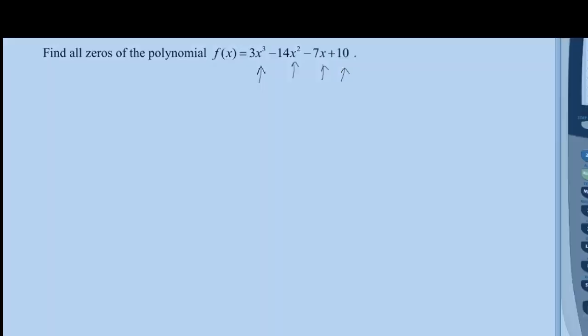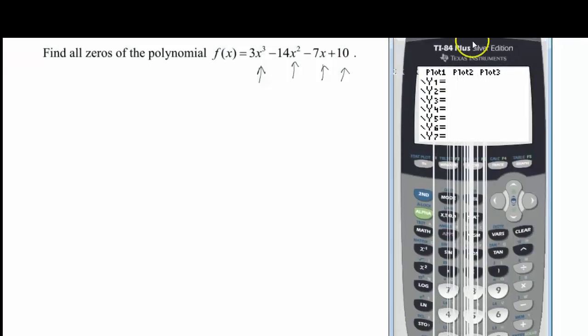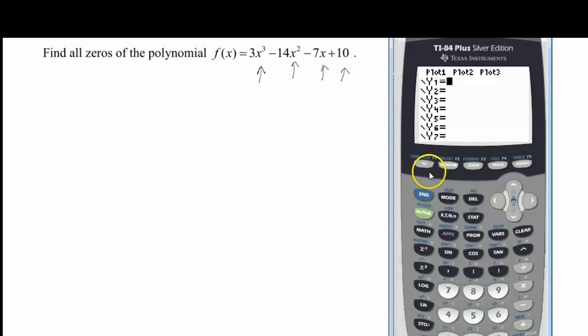Next thing I want to do is go to my calculator. So let me put my calculator into the screen here. And in my y equals, I'm going to go ahead and put this polynomial. So 3x to the third minus 14x squared minus 7x. My calculator is a little pokey here. And then plus 10.